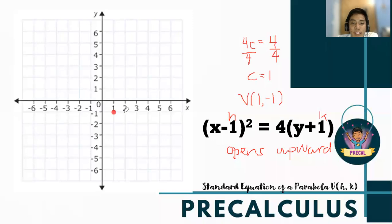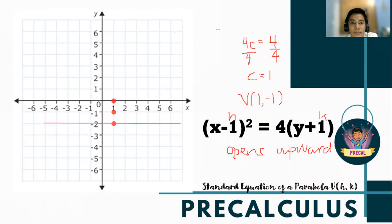The vertex is located at (1, -1), which is in the fourth quadrant. From the vertex, we identify the focus. Since the parabola opens upward, the focus is at (1, 0). Then for the directrix, it is located below the vertex. We can now draw the directrix — it is a horizontal line. So test the vertex again: our vertex is at (1, -1).